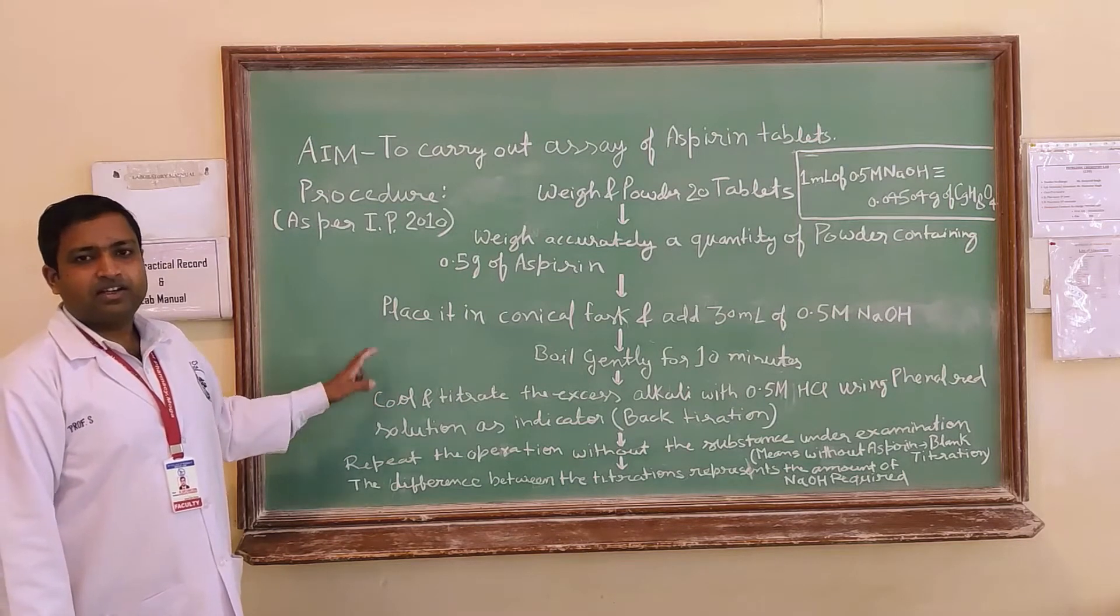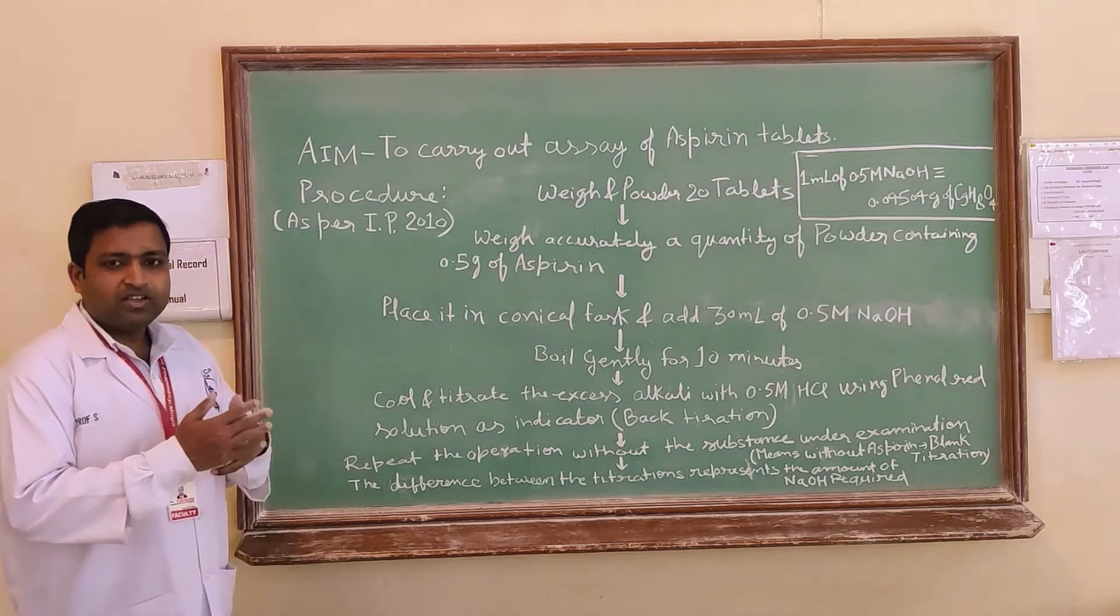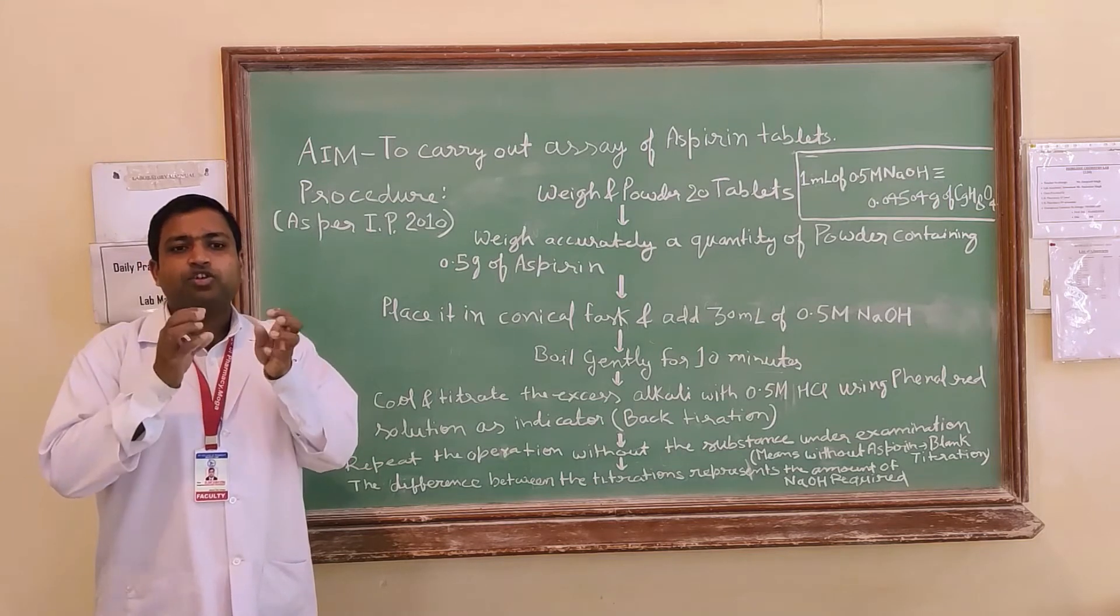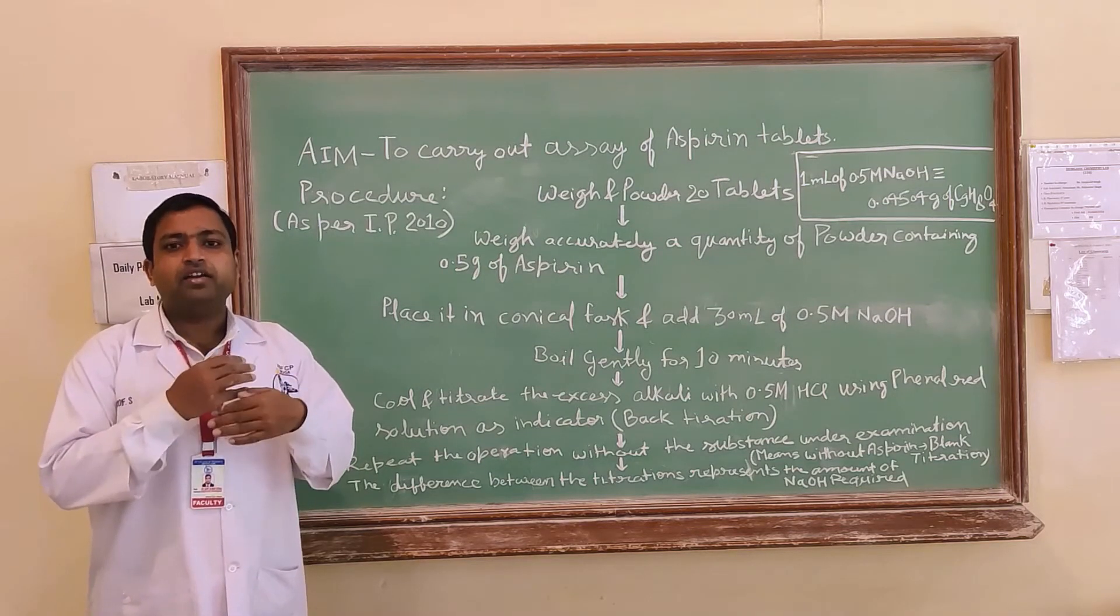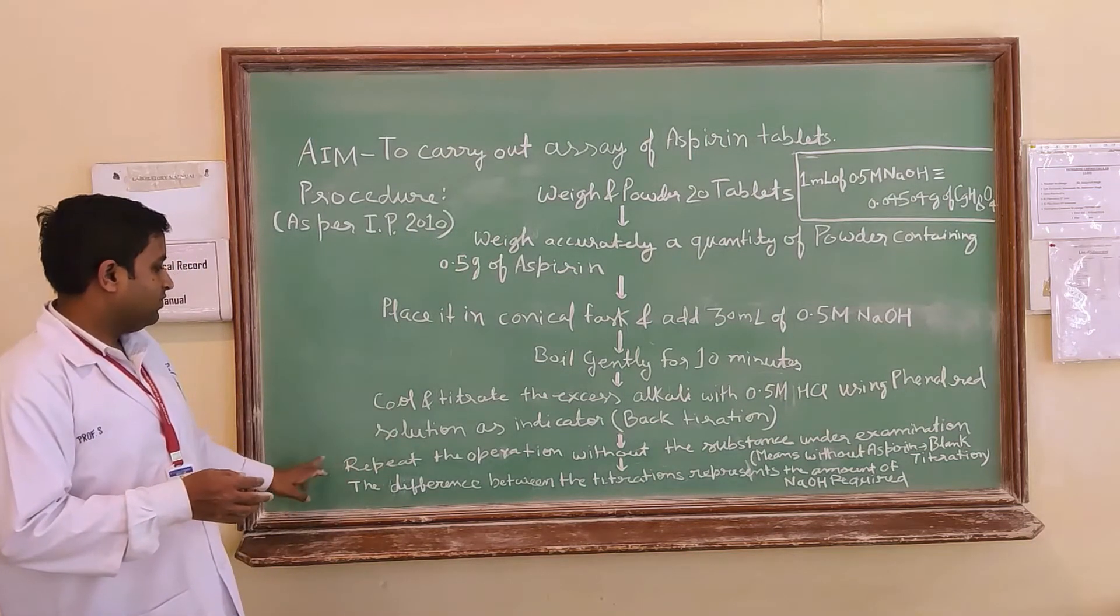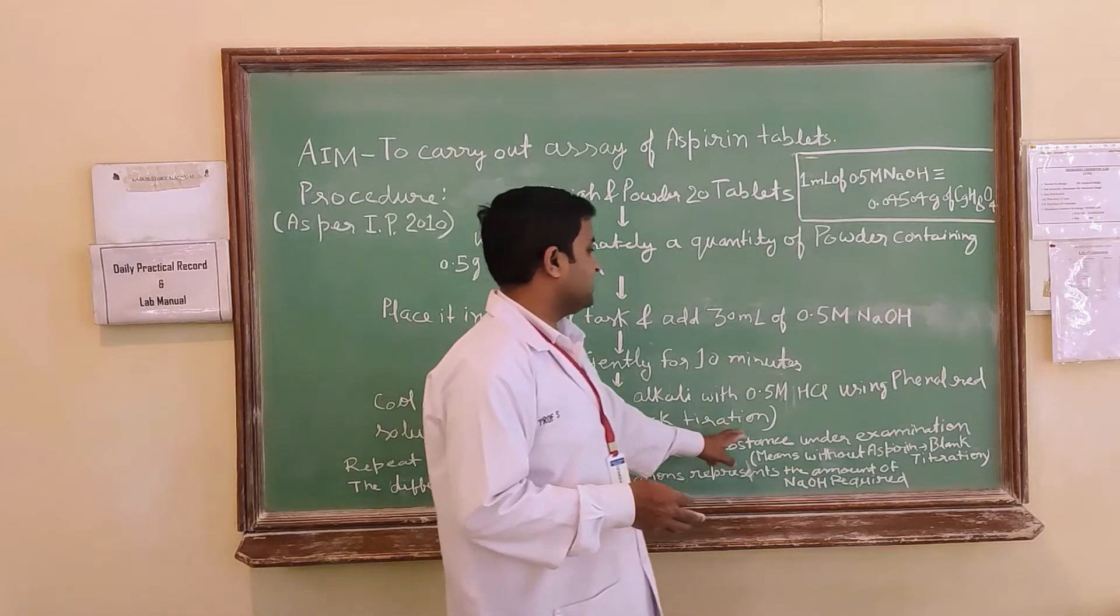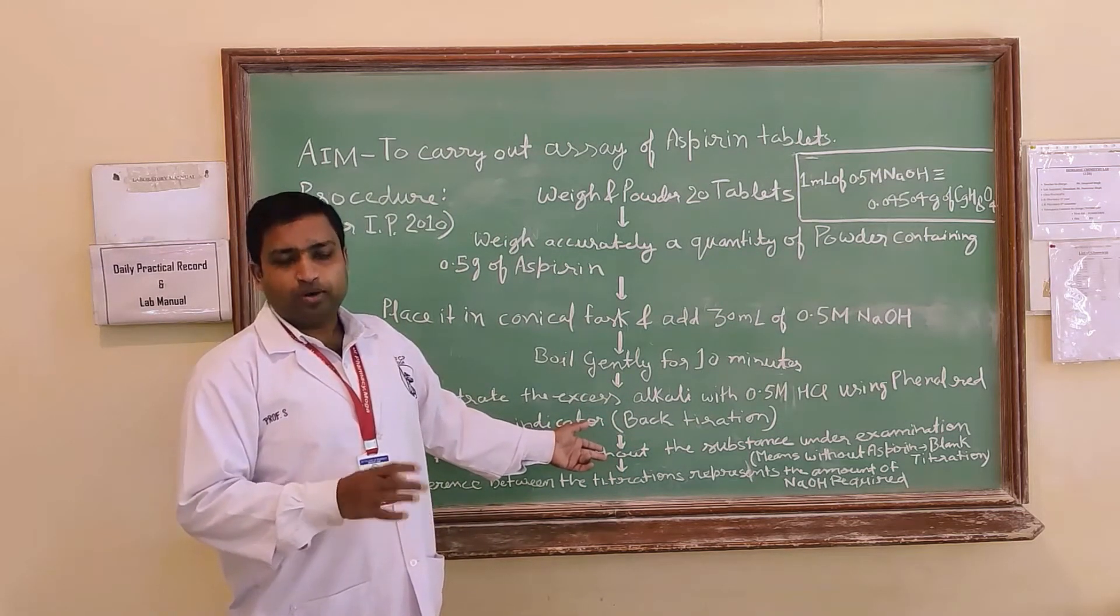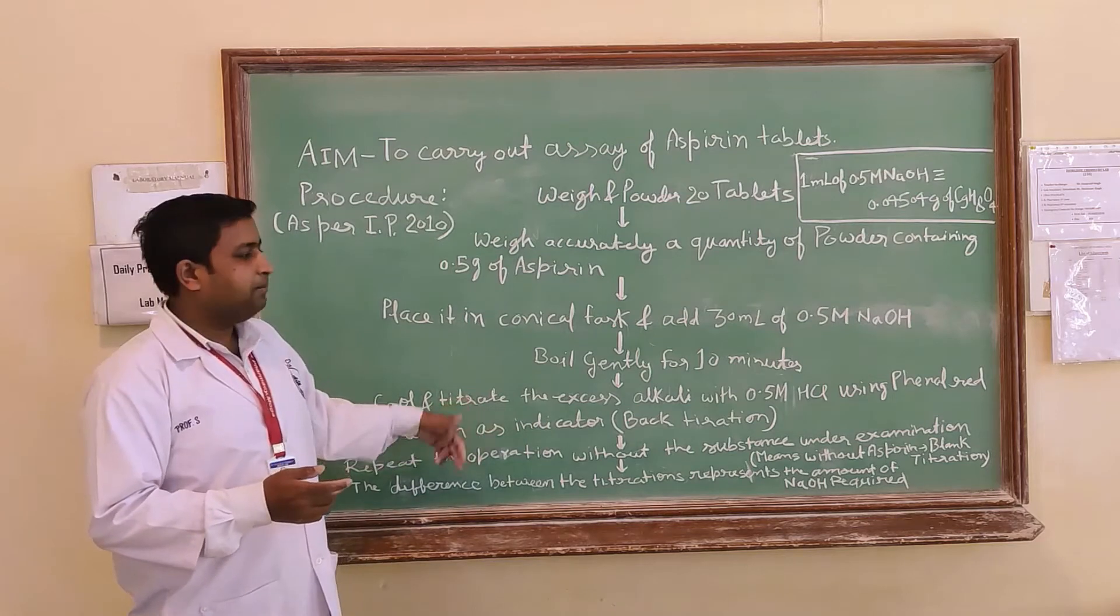It is back titration. Back titration means you are going to titrate excess of amount. This is known as back titration. When a suitable indicator is not available or the titration is of weak acid or weak base, when we can't be able to determine the end point, then we will use the back titration. Next repeat the operation without the substance under examination, means you have to perform the blank titration.